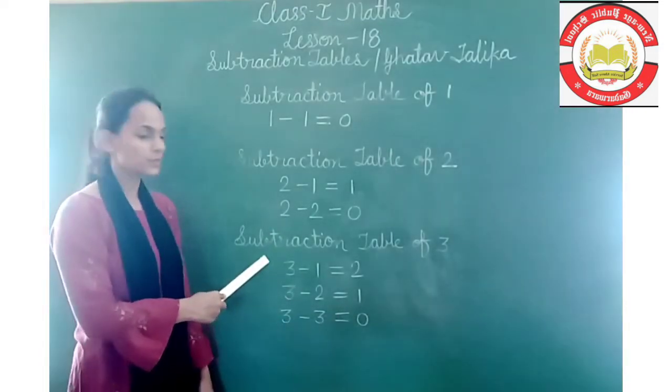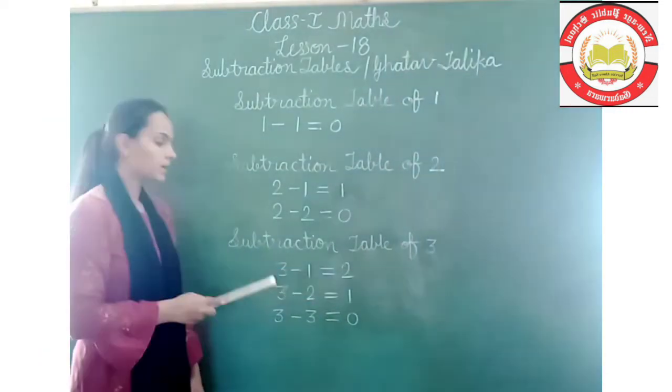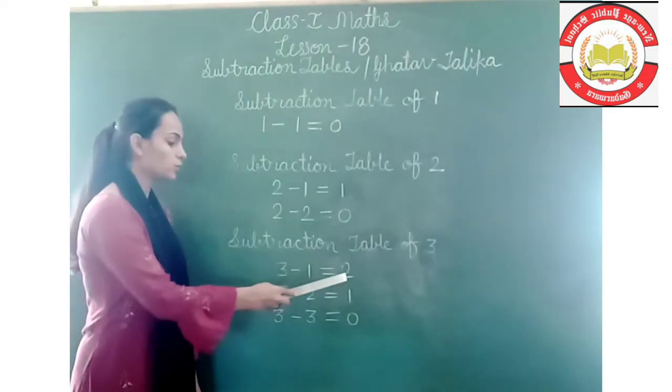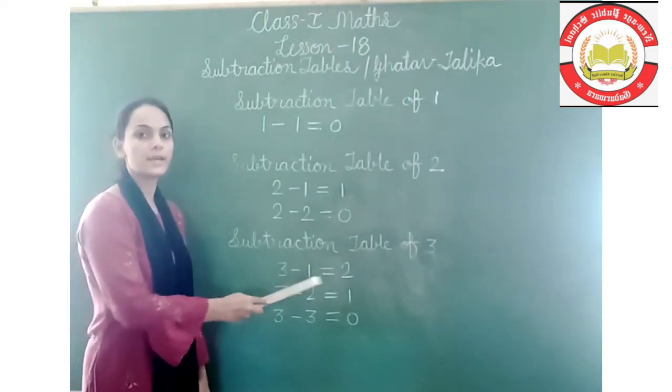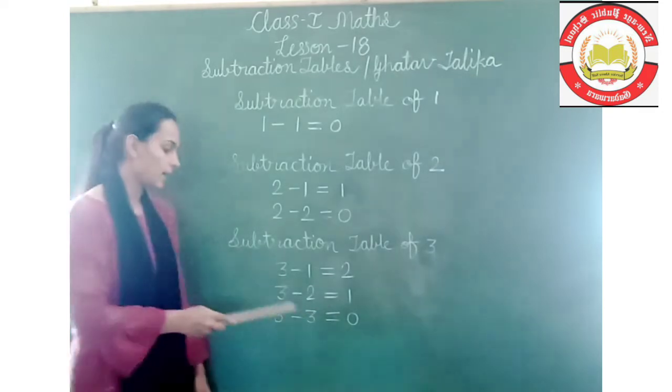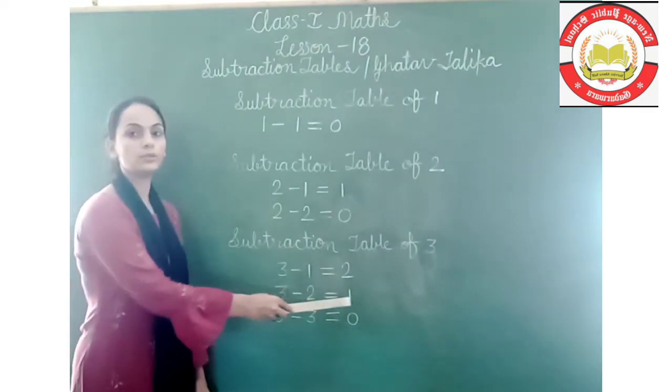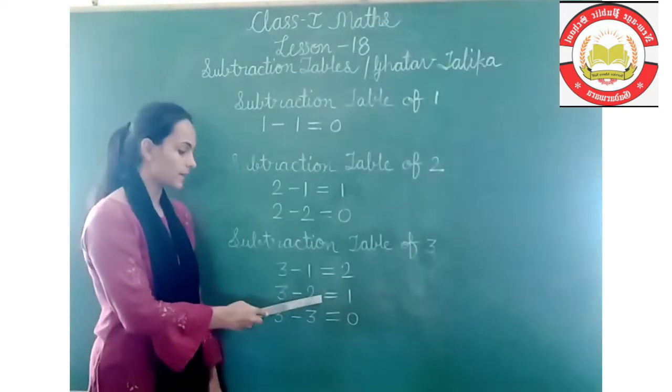Now we are taking subtraction table of 3. 3 minus 1 is equal to 2. So our answer is 2. 3 minus 2 is equal to 1.